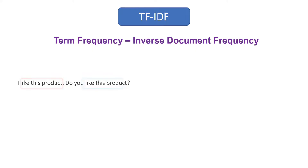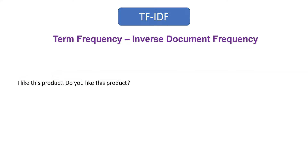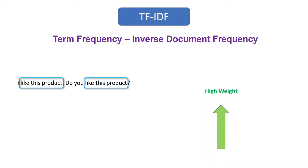Let's see how TF-IDF achieves this. Let's say we have these sentences: 'I like this product' and 'Do you like this product?' Here, the three words 'like', 'this', and 'product' occurred twice in the sentences, which means these words are more important than other words, so they should get high weightage. If a word occurred many times in a sentence, that particular word should get high weightage. That is the idea behind term frequency.